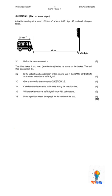We're looking at grade 10, November 2016, paper 1, and it's a question on equations of motion. A taxi is traveling at a speed of 25 meters per second when a traffic light 40 meters ahead changes to red.